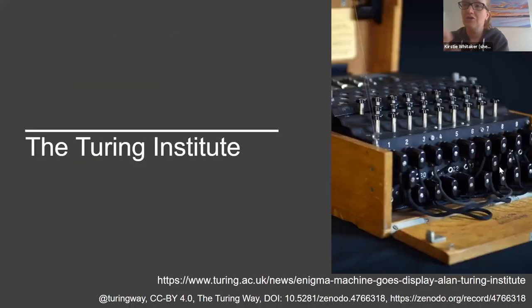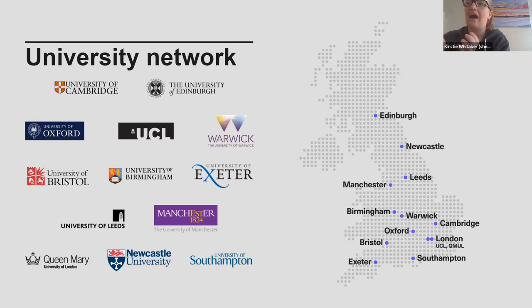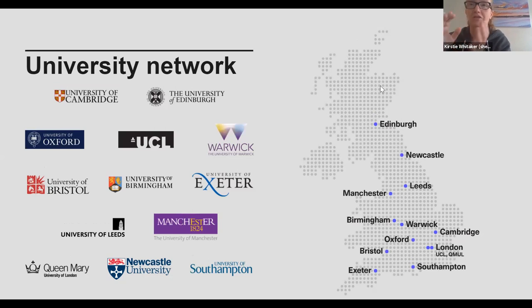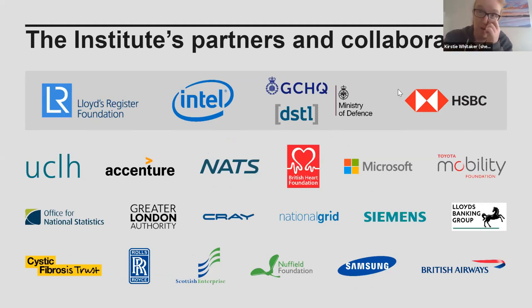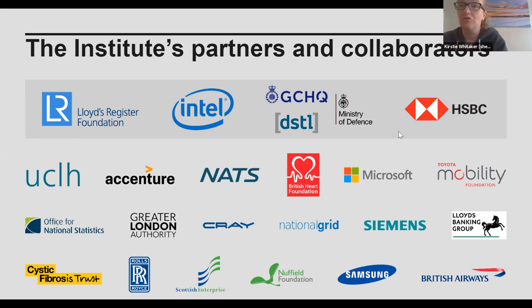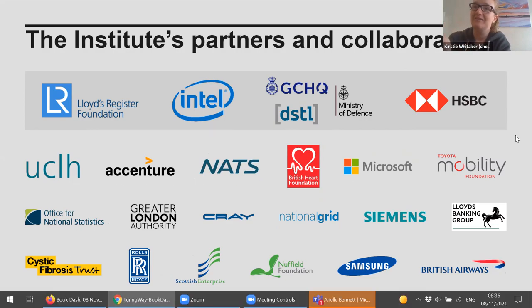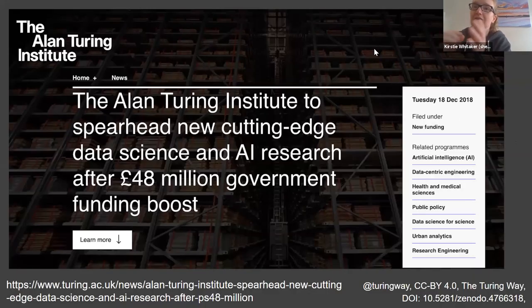I work at the Turing Institute, which is the UK's national institute for data science and artificial intelligence. It's funded in part by 13 university partners from across the UK, and also has a significant number of industrial partners and partners from the third sector — charities and government. The Turing Way itself is funded by the AI for Science and Government program, which is the program that Chintia mentioned, representing a 40 million pound investment.